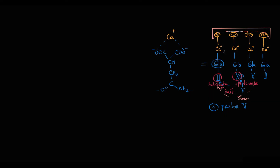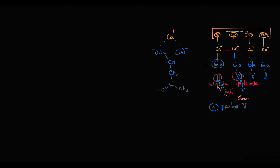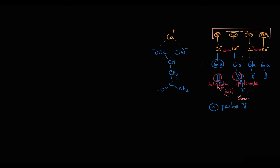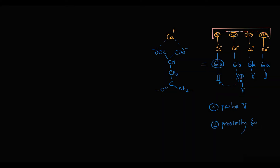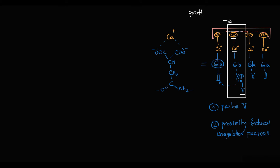This calcium-dependent binding permits all coagulation factors to appear in one place on the cell membrane, in close proximity to each other, which markedly increases the rate of prothrombin activation. So the second factor is proximity between coagulation factors. Negatively charged membrane phospholipids, calcium molecules, factor 10, and factor 5 all together form the so-called prothrombinase complex, which provides a huge increase in the rate of thrombin activation.